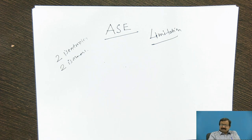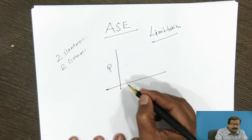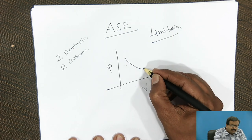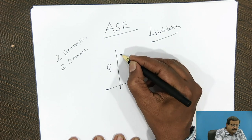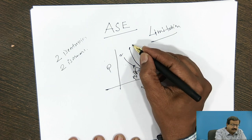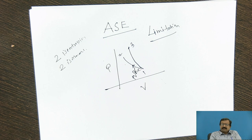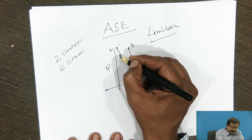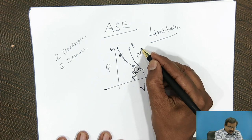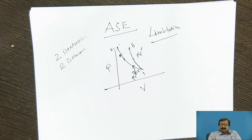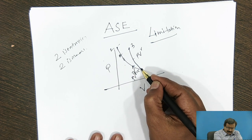If you have a doubt that we can have an isentropic process connected to an isentropic process — consider the PV diagram. This is my isentropic process, where PV raised to gamma equals constant. Suppose this is another isentropic process, say 2 to 3. Both processes have PV raised to gamma. What has happened? Two isentropics have crossed each other — and that is not possible.